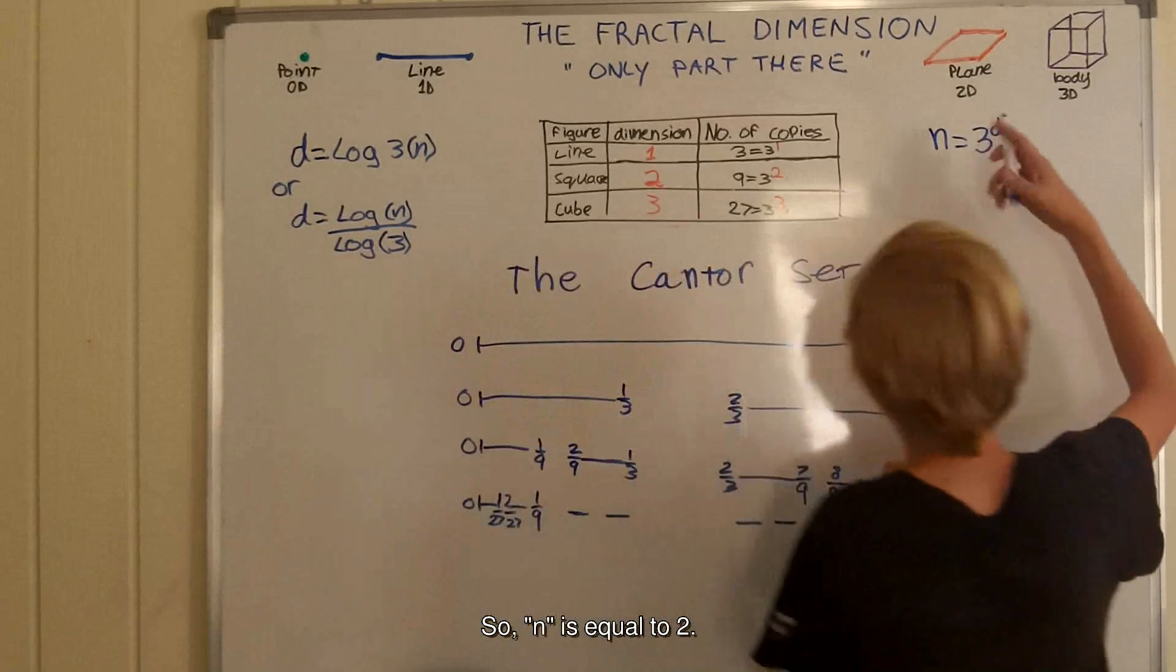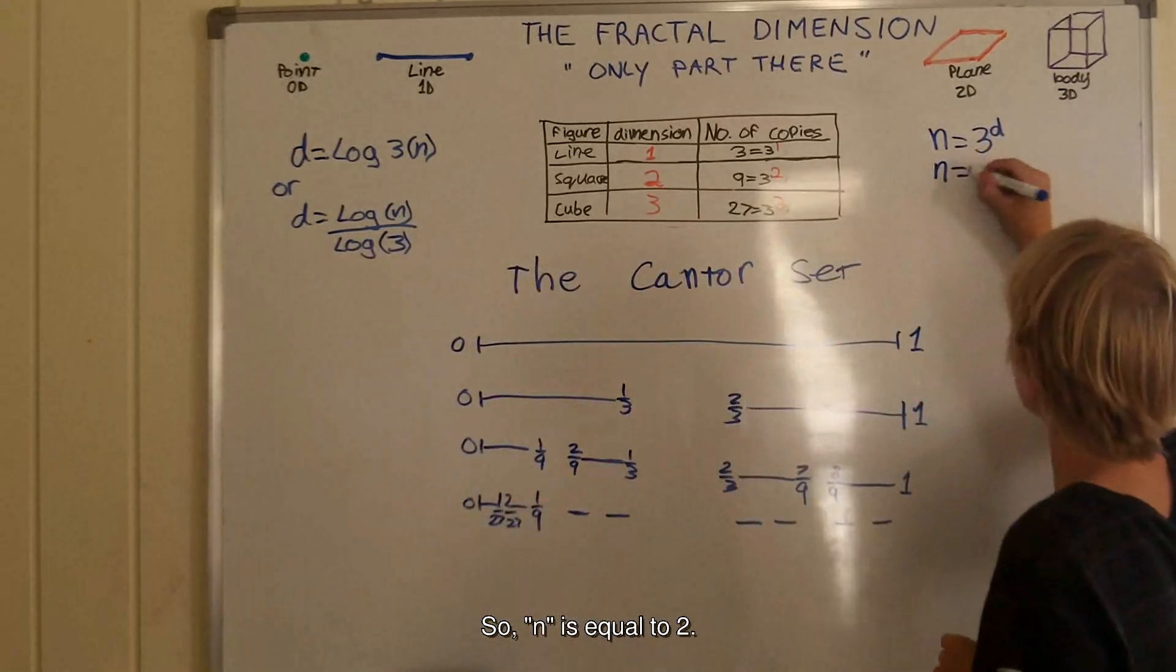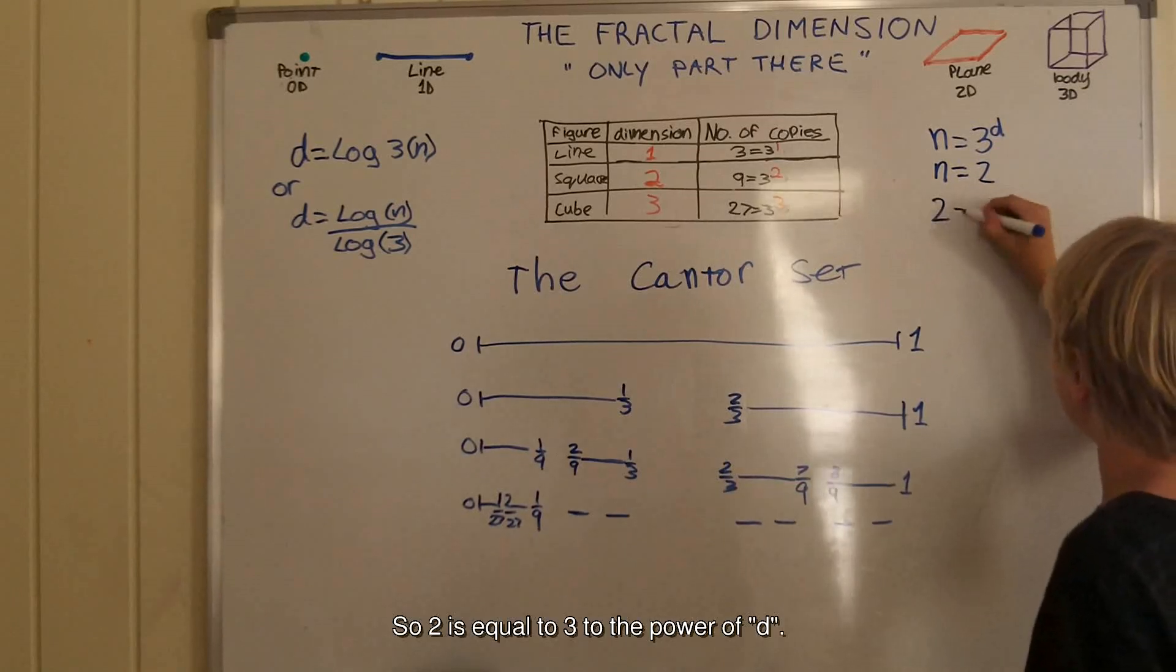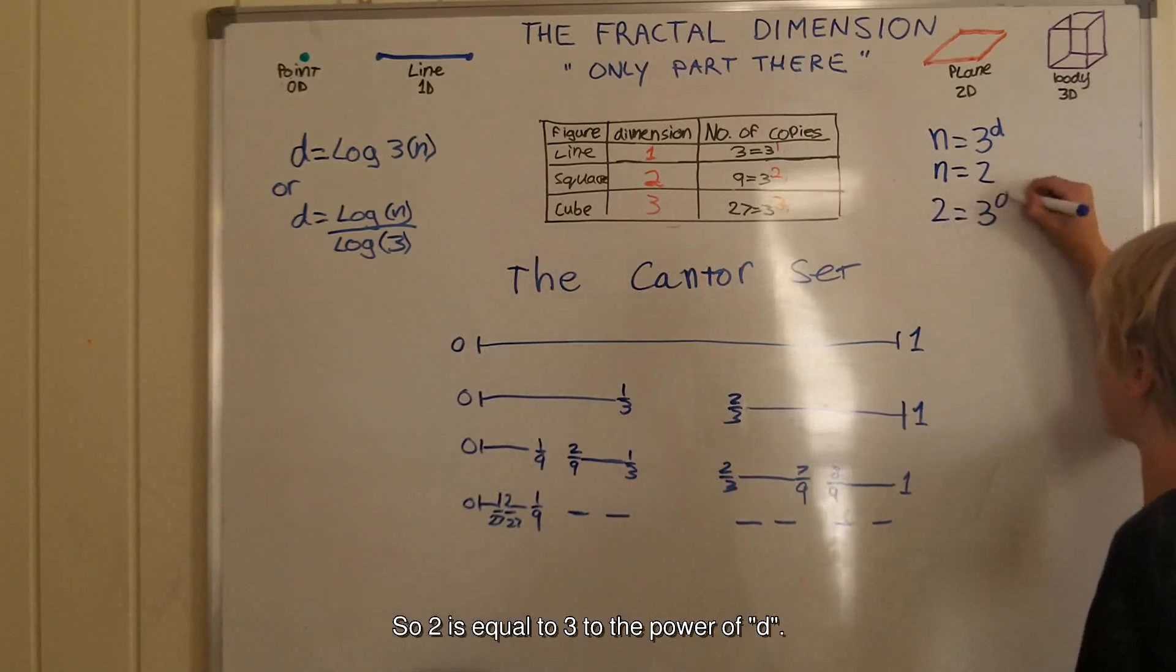So, n is equal to 2. So, 2 is equal to 3 to the power of d.